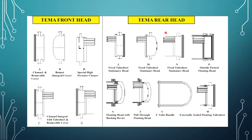According to TEMA standards, the main types of front head are: A type (removable cover type), B type (bonnet type, also called integral cover type), and D type (used for special high pressure purposes), as well as C type and N type. The different types of rear head include L type, M type, and N type, which are fixed tube sheet rear heads, and P, S, T, U, and W types, which are floating type rear heads.